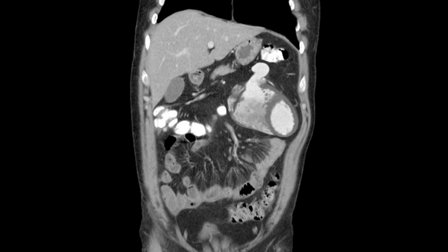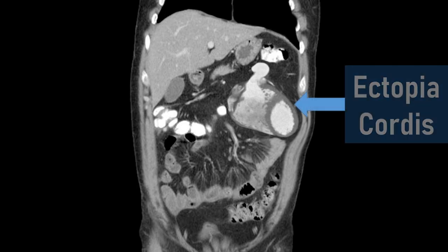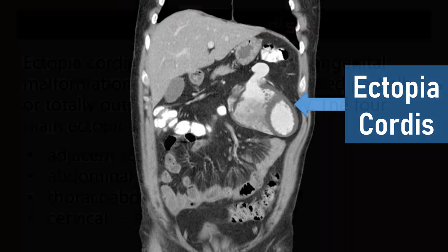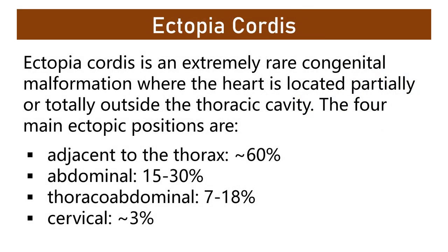There is also mesenteric vascular congestion. To understand this, we will discuss ectopia cordis. Ectopia cordis is an extremely rare congenital malformation where the heart is located partially or totally outside the thoracic cavity.